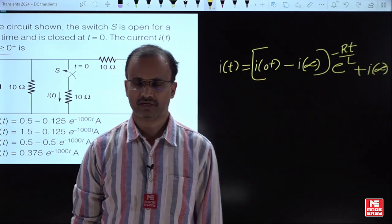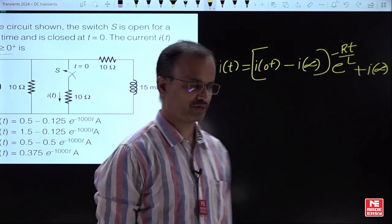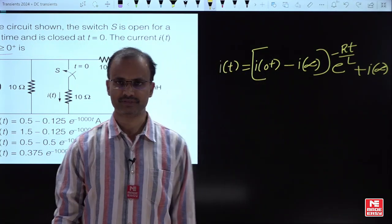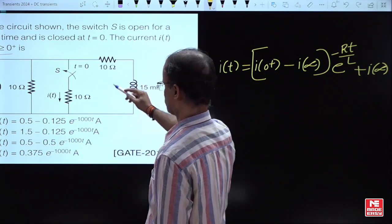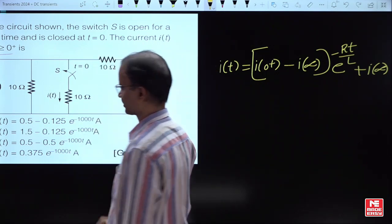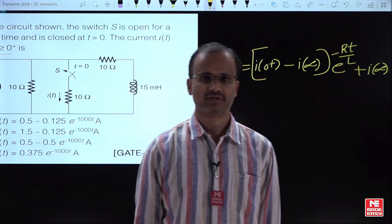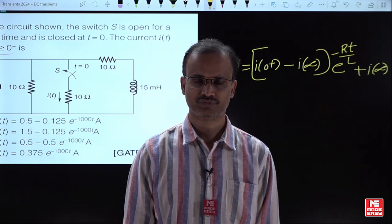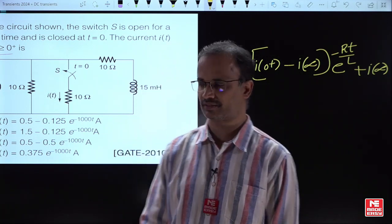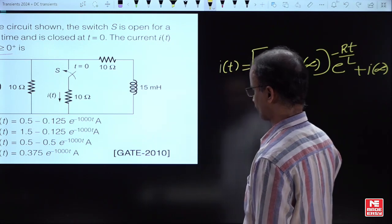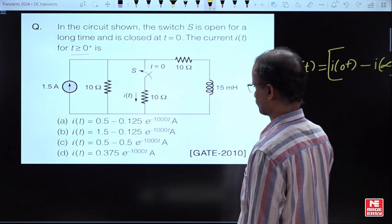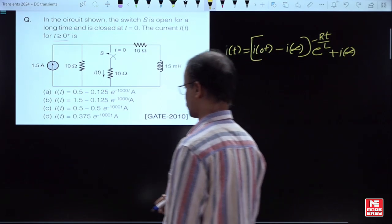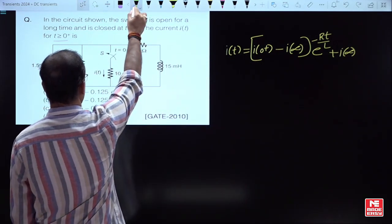Corresponding to this general formula, the first requirement is I(0⁺) — that means we need the initial current for this branch. For that, first you have to focus on the inductor's initial current. To find the initial current, let us develop the equivalent circuit at t = 0⁻.